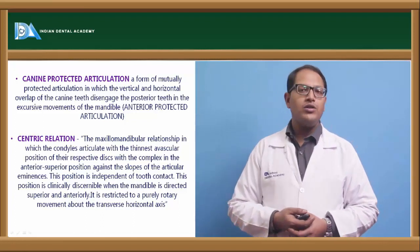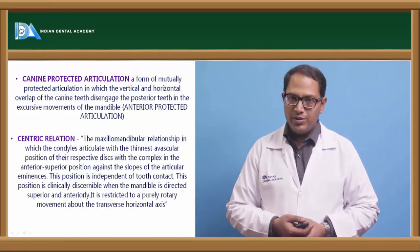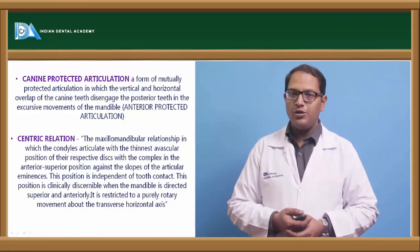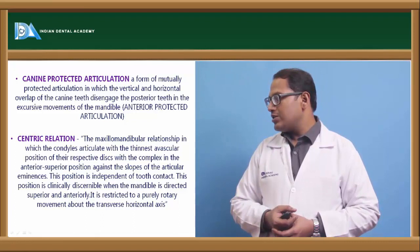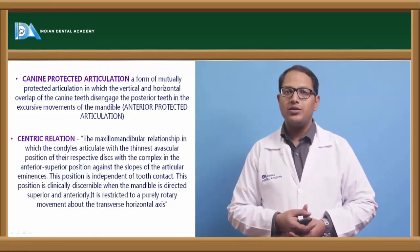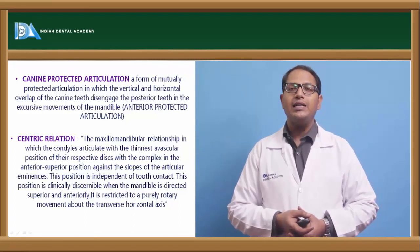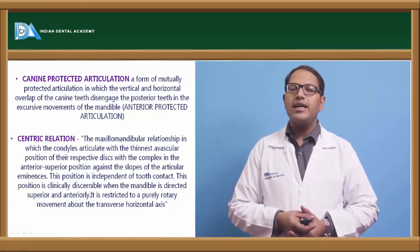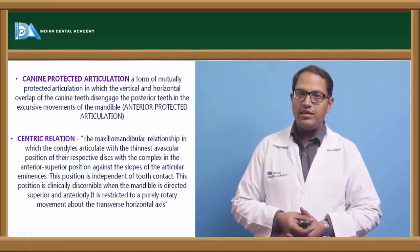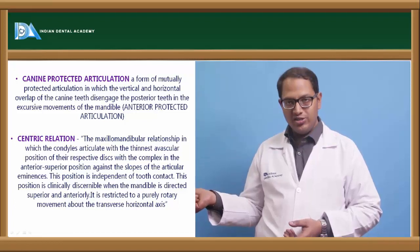Centric relation we all know is the maxillomandibular relationship in which the condyles articulate with the thinnest avascular portion of the respective disc in the anteroposterior superior position against the slopes of the articular eminence. This position is clinically indiscernible and it is independent of tooth contact when the mandible is directed superiorly and anteriorly in its transverse horizontal hinge axis.